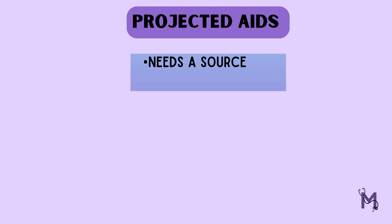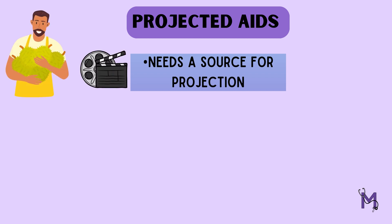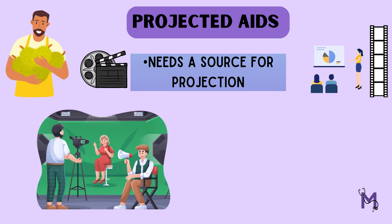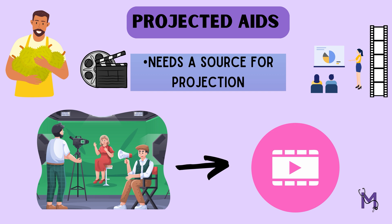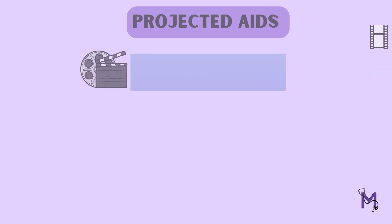The projected aids are those which need projection from a source onto a screen, like cinemas, slides, film strips, or video cassettes. The use of such aids proves to be fruitful as real life situations can be enacted in films, making the complete process explanatory.